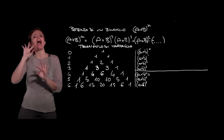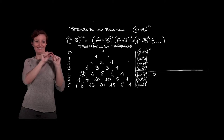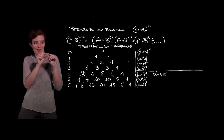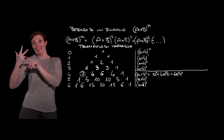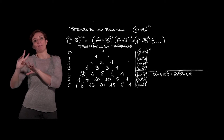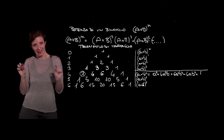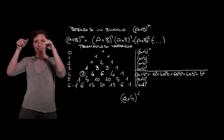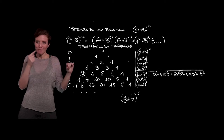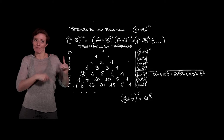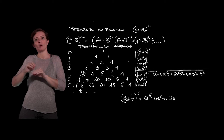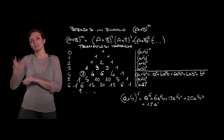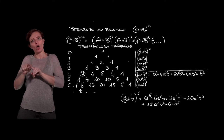For example, (a+b)⁴: the coefficient 1 gives a⁴, then 4a³b, then 6a²b², then 4ab³, then b⁴. The exponent of a decreases while that of b increases. Generalizing, for (a+b)⁶, using the last row we built in Tartaglia's triangle: a⁶ + 6a⁵b + 15a⁴b² + 20a³b³ + 15a²b⁴ + 6ab⁵ + b⁶.